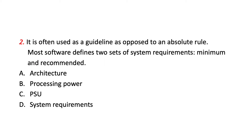2. It is often used as a guideline as opposed to an absolute rule. Most software defines two sets of system requirements: minimum and recommended. A. Architecture. B. Processing power. C. PSU. D. System requirements.